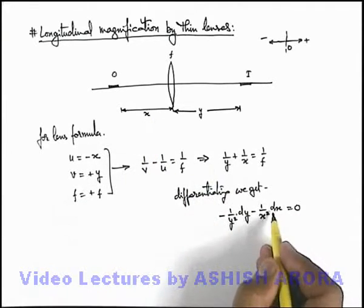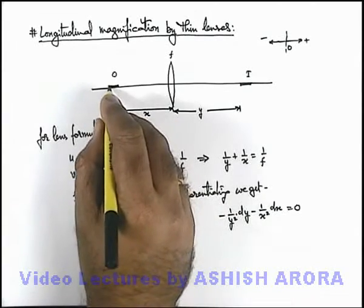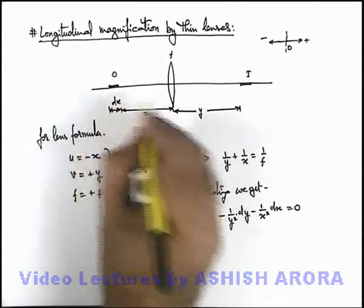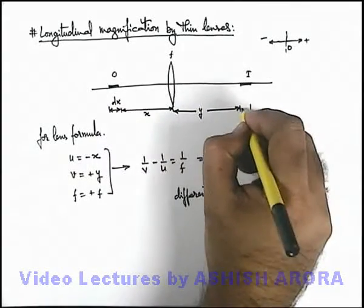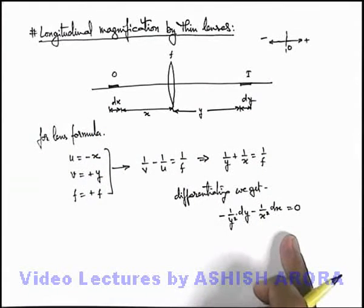If x is varying with dx, corresponding variation in y will be dy. So if the object width is very small and we consider this to be dx, then corresponding image width will be equal to dy, which are related by this expression.